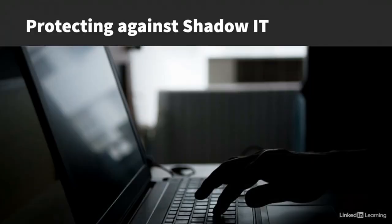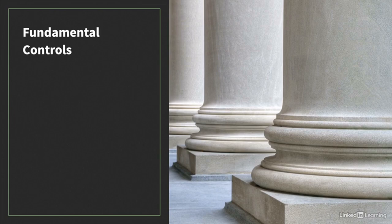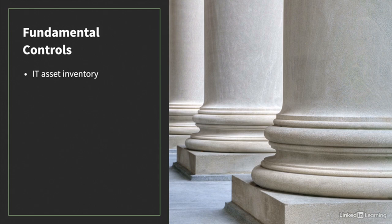Shadow IT can be challenging to both detect and prevent. The first fundamental control you need is an IT asset inventory. If you don't have a current inventory of your sanctioned IT assets, you won't be able to identify Shadow IT systems. Run an NMAP scan or use a similar tool to get a baseline of systems currently on your network. Review the results to make sure all systems found are authorized and deal with any that aren't. Next, make sure users know about correct IT deployment processes — it's hard to blame users who don't follow the system when they don't know what it is. Define a clear IT deployment process, write it down, and publish it in a place that's easy for users to find.